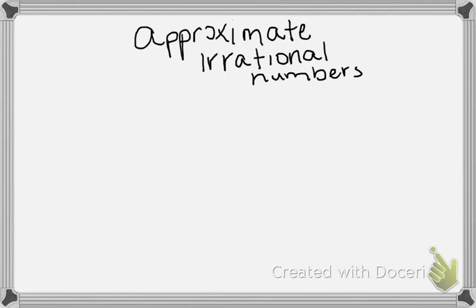This video is about how to approximate irrational numbers — basically how to approximate square roots. Remember, an irrational number is a number that can go on forever without terminating, meaning it never ends and it doesn't repeat. Some of the most common irrational numbers are square roots, and what I'd like to show you is how you can approximate them — estimate about what value they are.